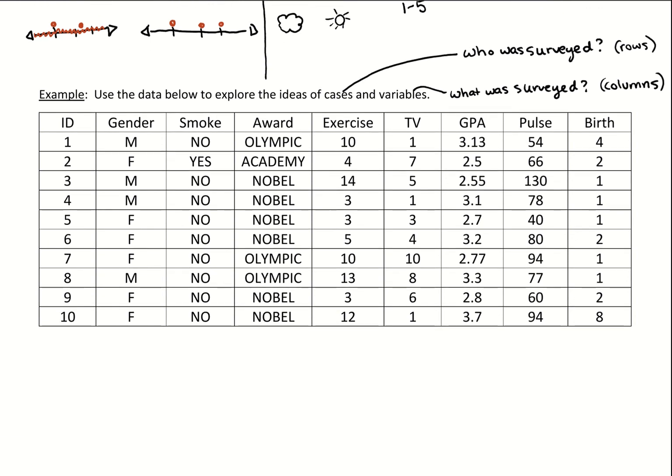So what we have here is information for 10 people. We collected information on gender, whether or not they smoke, if they could win an award, would they won an Olympic gold medal, Academy Award, or Nobel Peace Prize, how many hours per week do they exercise, how many hours per week do they watch TV, their GPA, beats per minute pulse, and then birth order. Which means if they're first born, they're the eldest. And then there's this number 10 person who was the eighth born, so they have at least seven siblings that are older than them. But this is birth order giving us a first, second, fourth.